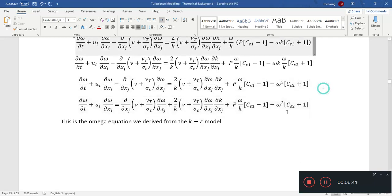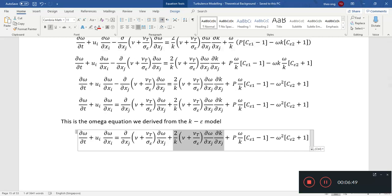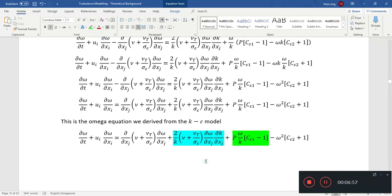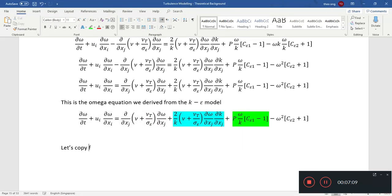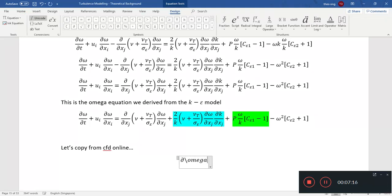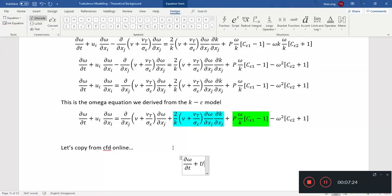Now we have this equation we can directly compare the similarities and differences. I will just highlight some of the terms. This one I can put in cyan, this one I can put in green. These few terms, if you see, these are pretty similar. So I'm going to copy this over from CFD online.